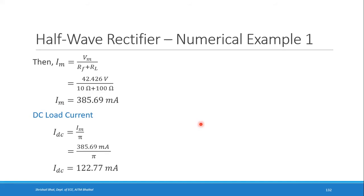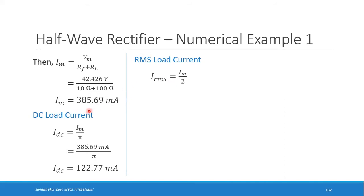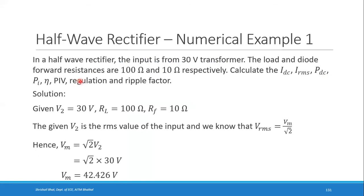Next, find IRMS, the RMS load current. For a half wave rectifier, IRMS = Im / 2 = 385.69 / 2 = 192.845 milliamps.